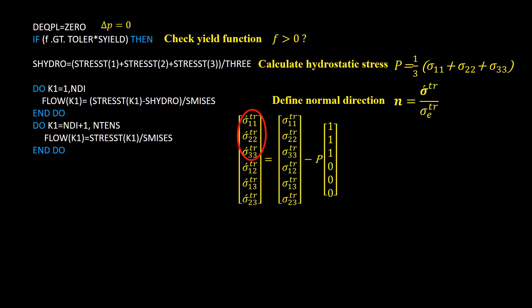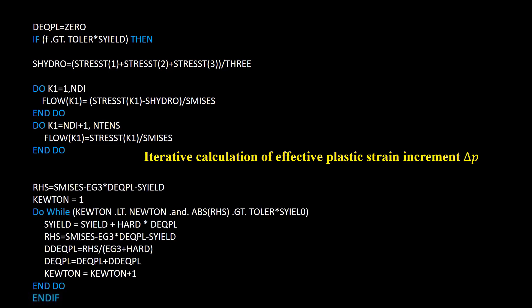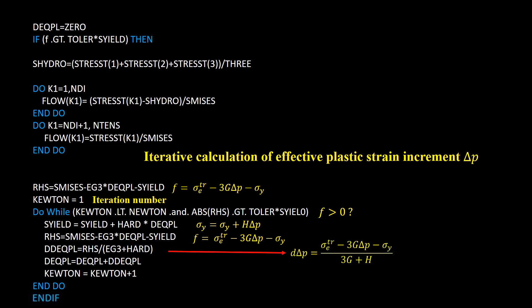Note the difference between the first and second three components of the flow direction based on the formula. To predict the effective plastic strain increment delta p, we use Newton iterative solution. First calculate the yield function — this value should be zero after convergence and serves as the residual. The iteration number is set to one. The while-loop repeats until exceeding the maximum allowable iterations or convergence of the yield function to zero, preventing an endless loop. In each iteration: update the flow stress, calculate the yield function, calculate the effective plastic strain increment correction, update delta p, and update the iteration number.